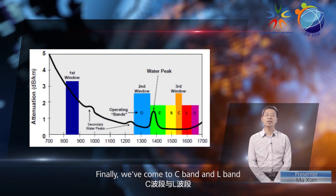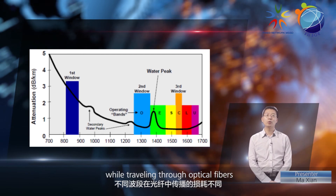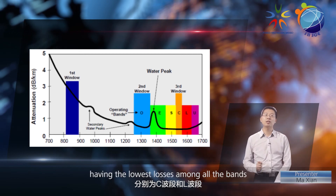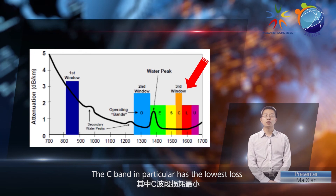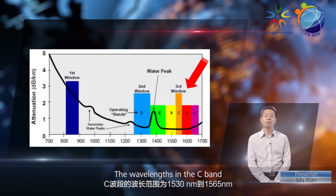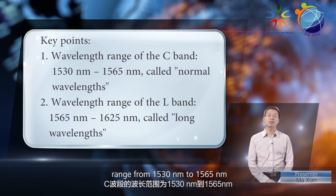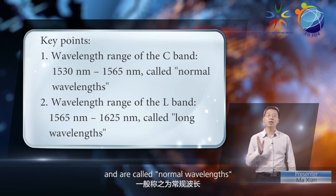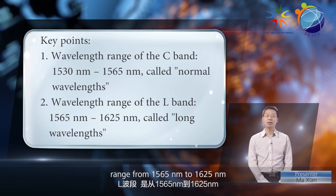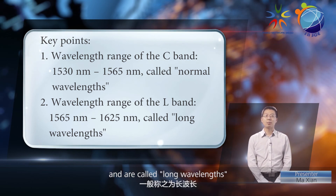Finally, we've come to C-band and L-band. Light undergoes certain losses while traveling through optical fibers. Different bands have different losses, with the C-band and L-band having the lowest losses among all the bands. The C-band in particular has the lowest loss and is widely used in WDM systems. The wavelengths in the C-band range from 1,530 nanometers to 1,565 nanometers and are called normal wavelengths. The wavelengths in the L-band range from 1,565 nanometers to 1,625 nanometers and are called long wavelengths.